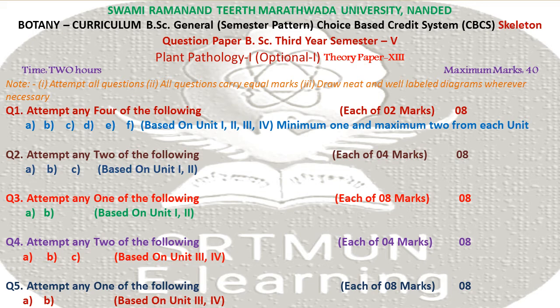Question 2: Attempt any 2 of the following, based on Unit 1 and 2, each of 4 marks. Question 3: Attempt any 1 of the following, based on Unit 1 and 2, each of 8 marks. Question 4: Attempt any 2 of the following, based on Unit 3 and 4, each of 8 marks. Question 5: Attempt any 1 of the following, based on Unit 3 and 4, each of 8 marks.